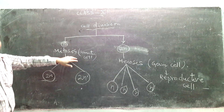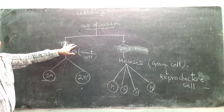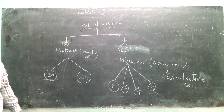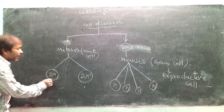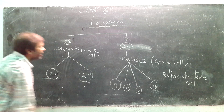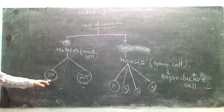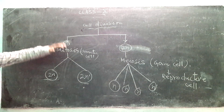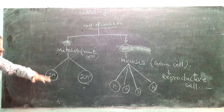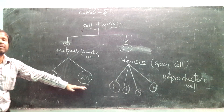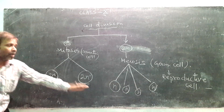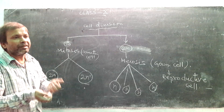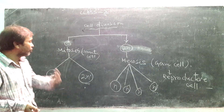Mitosis is a type of cell division which takes place in the somatic cell. The number of chromosomes remains the same after cell division, and one cell is divided into two new cells. In mitosis, from one cell, two new cells are made, and the number of chromosomes is the same. The chromosome is the genetic, hereditary part.